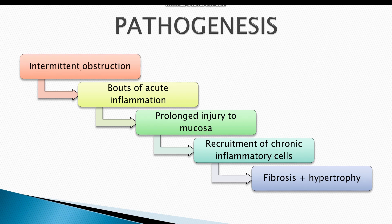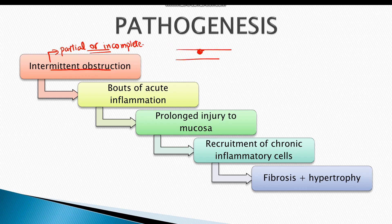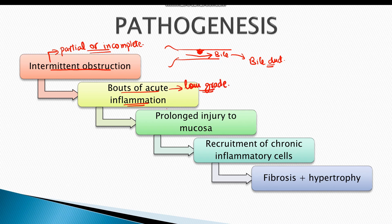Chronic cholecystitis results from intermittent obstruction — that is, partial or incomplete obstruction. In case of incomplete obstruction, there is some retention but a small amount of bile can also flow out into the bile duct. This intermittent obstruction leads to bouts of acute inflammation. These bouts are of low grade and are mostly ignored by the patient.